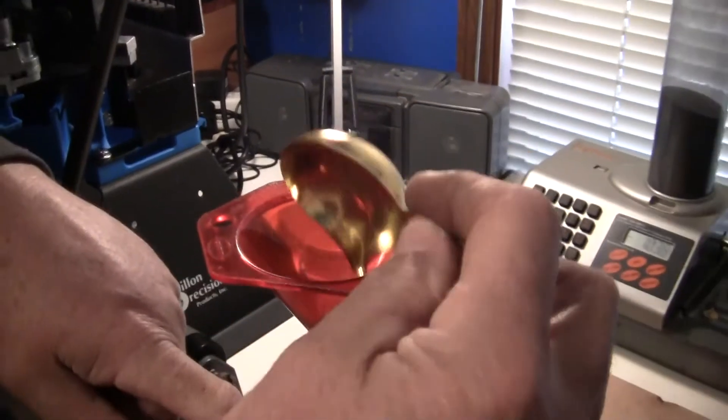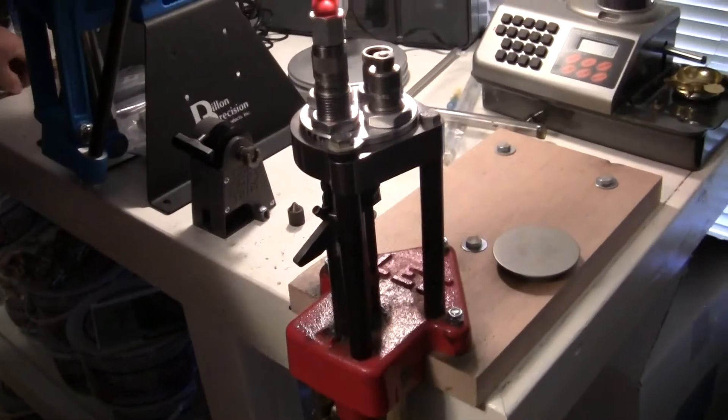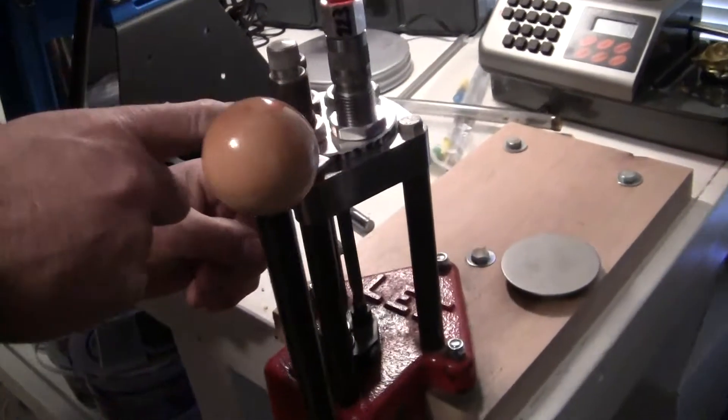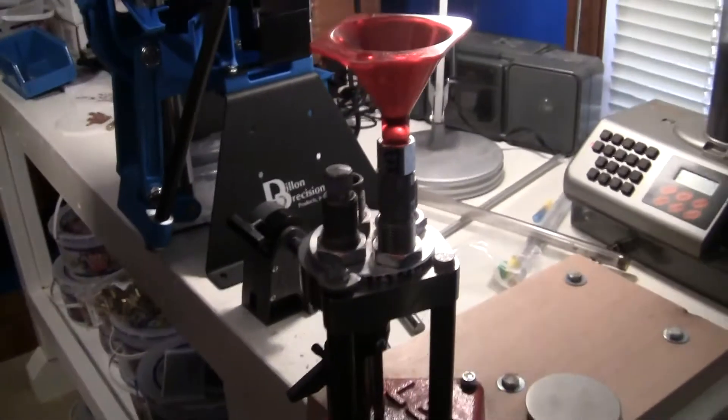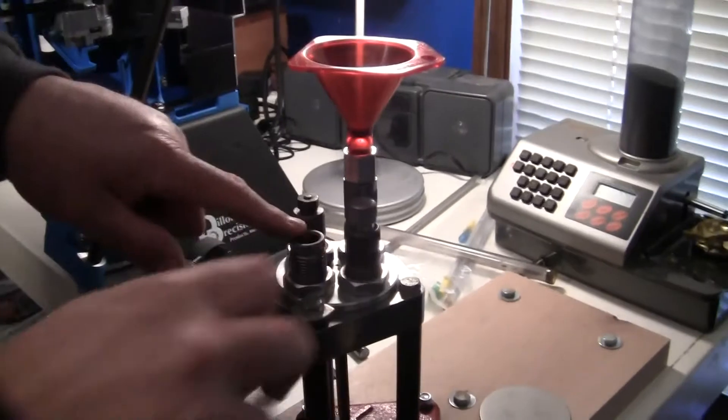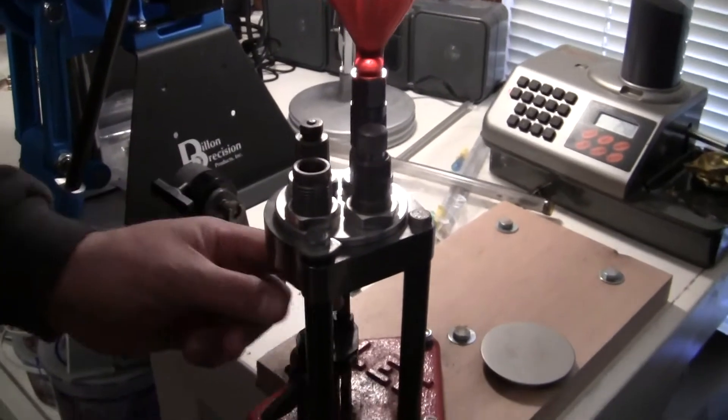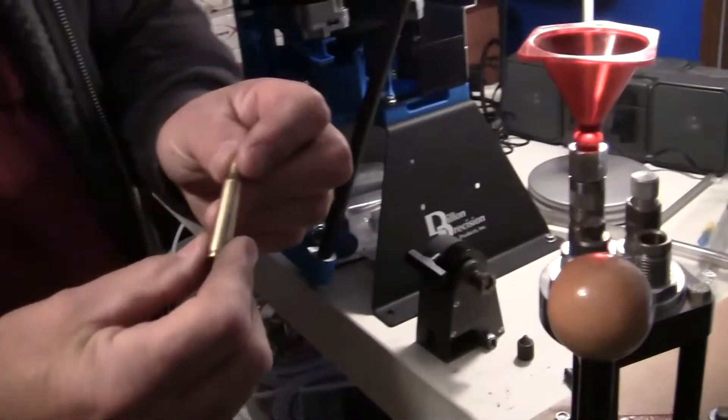On the downstroke it rotates to the seating die. Back down once into the factory crimp die, and another loaded round.